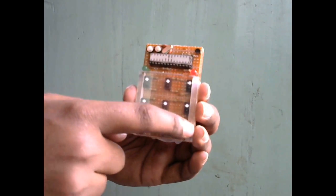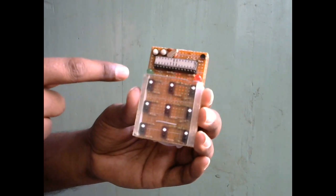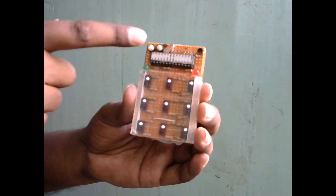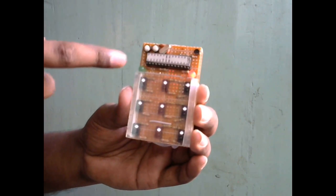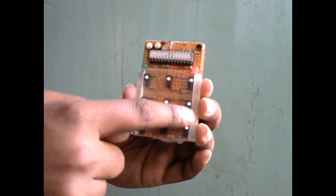For updating the pattern, I first need to draw the right pattern. Then I need to push the update pattern button. Red LED glows means it is ready to receive the new pattern.